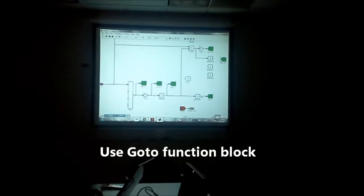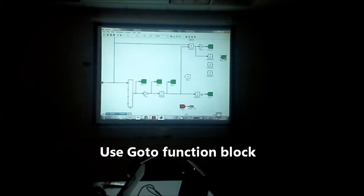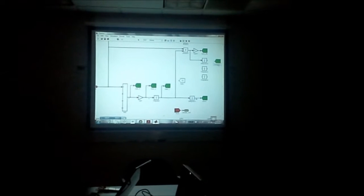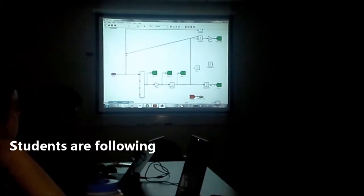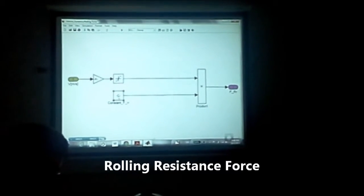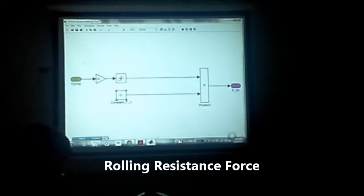Then I will copy another go to function block and change the name to EPR. The parameter. The name of the parameter. Yeah. So we will have something like this.